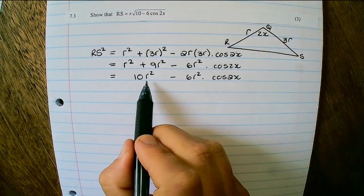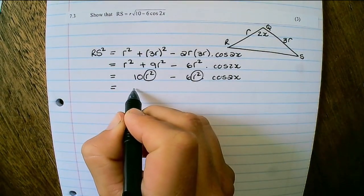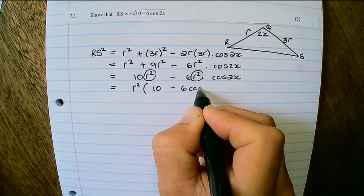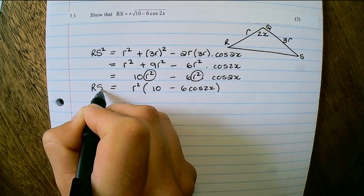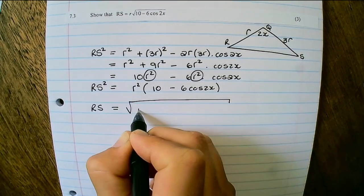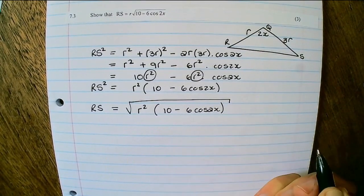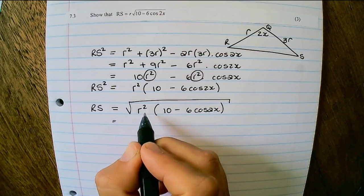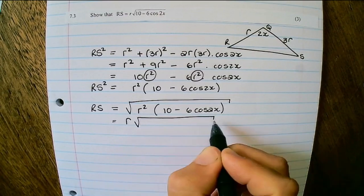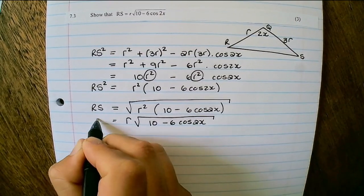Now I can see that R squared is a common factor. So I factorize, and that will be R squared in brackets, 10 minus 6 cos 2X. And this is equal to RS squared. So to find RS, I need to take the square root of R squared times 10 minus 6 cos 2X. And the square root of R squared is R, and then the contents of the brackets would stay within the square root. That's 10 minus 6 cos 2X. And that is the length of RS.